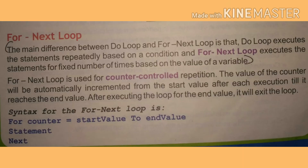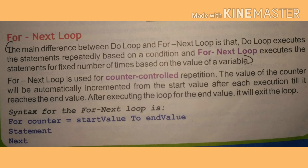Another important loop is the for next loop. It is used for counter-controlled repetition. The value of the counter will be automatically incremented from the start value after each execution until it reaches the end value, then it will exit the loop. The main difference between do loop and for next loop is that do loop executes the statement repeatedly based on a condition, whereas the for loop executes a statement a fixed number of times depending upon the value of the variable. For example, if the value of the variable is 6, it will repeat 6 times.